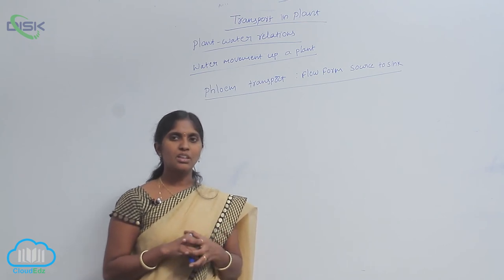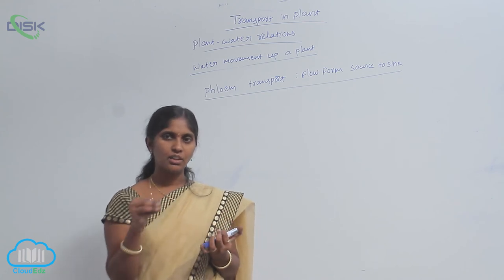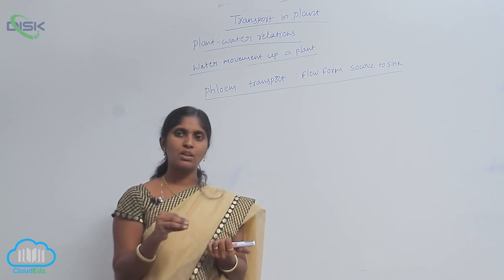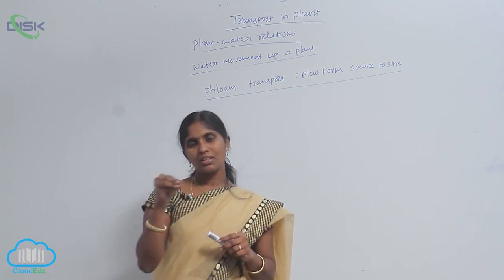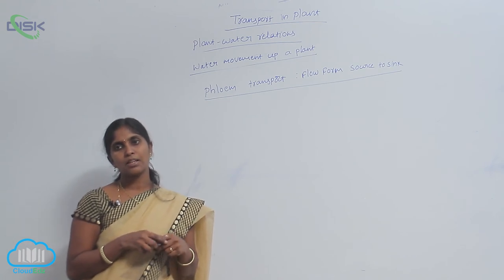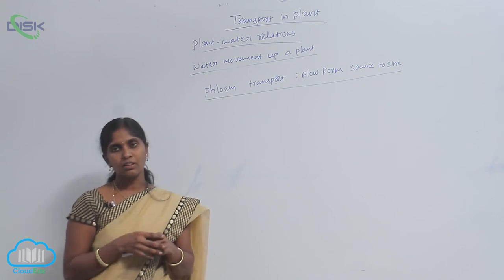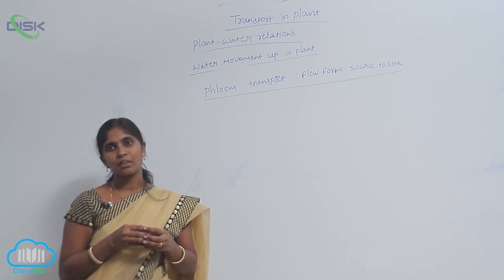To maintain the equilibrium, the water enters into the phloem through osmosis. When the water enters into the phloem, the sucrose sap becomes dilute. There the pressure potential is formed.